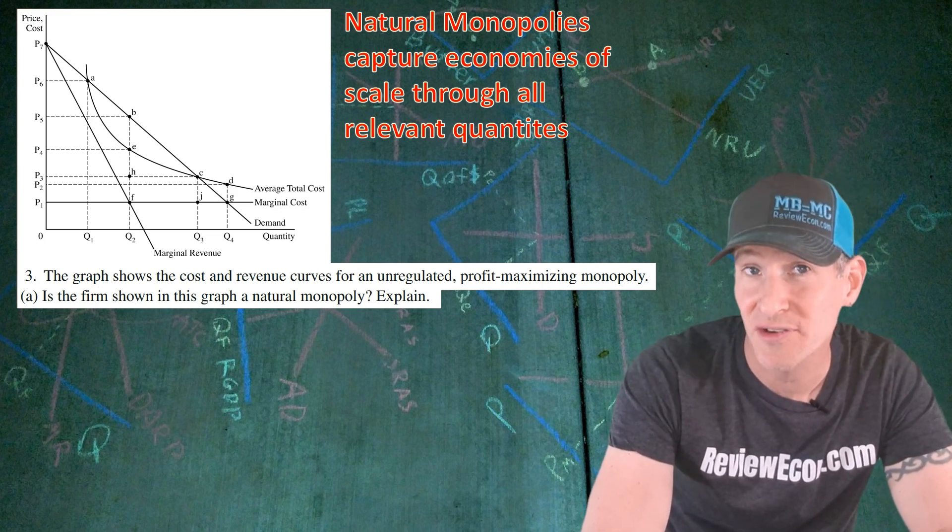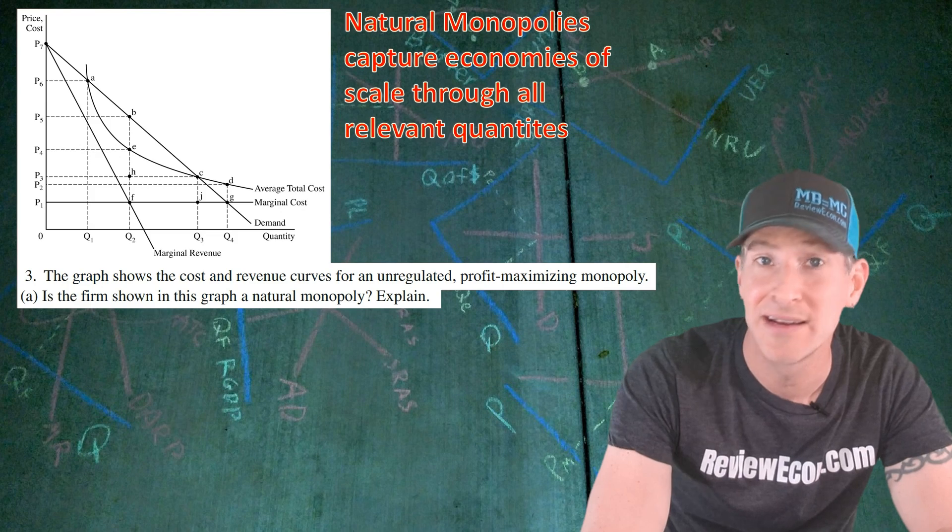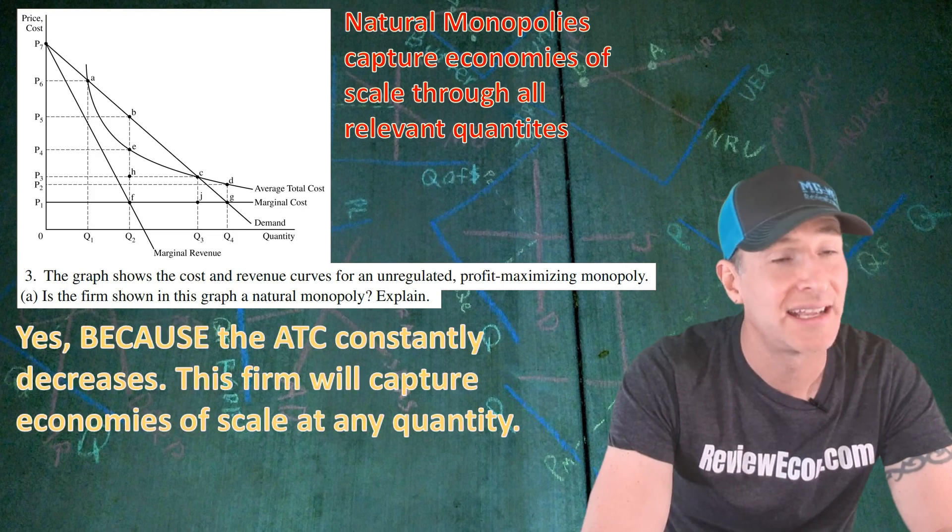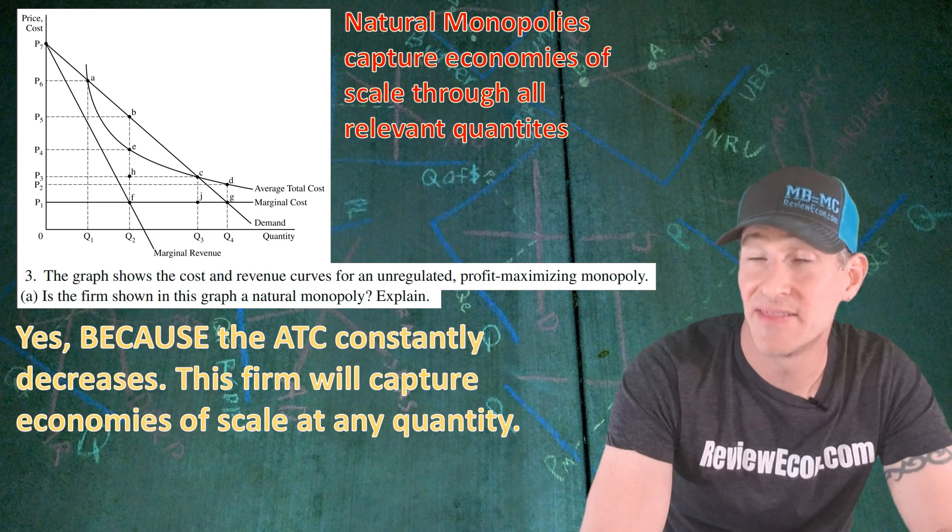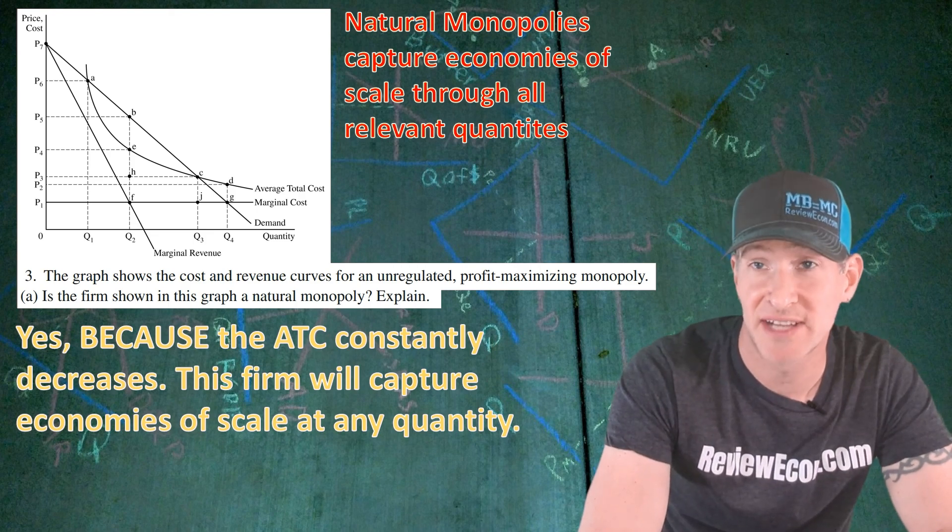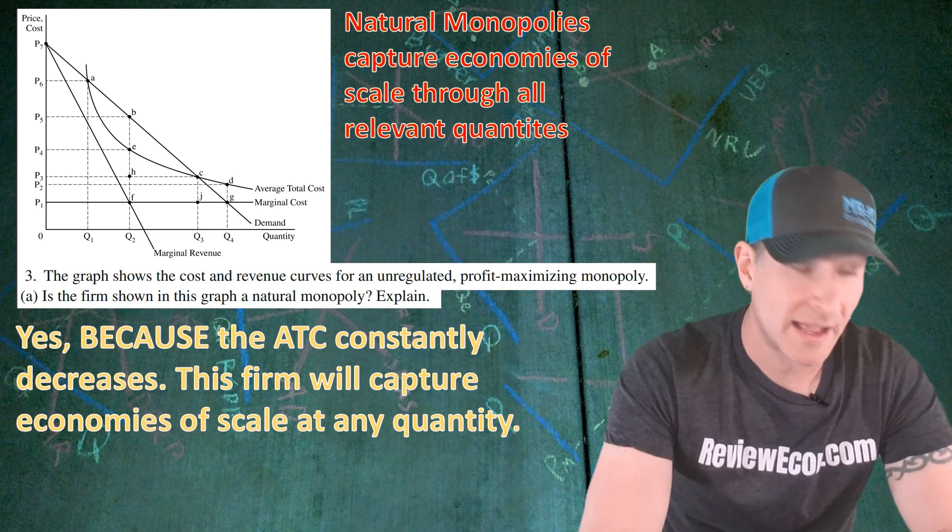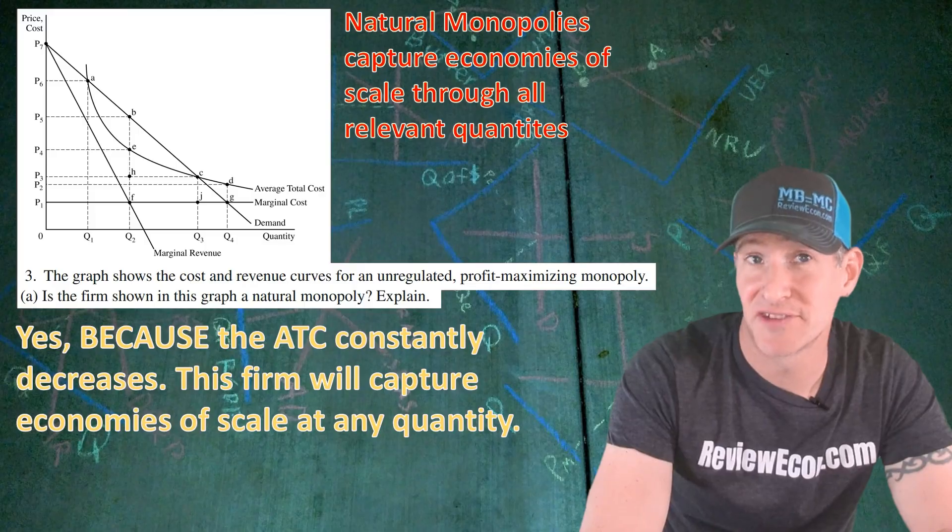And since the average total cost curve on this graph is constantly downward sloping, that leads us to our answer here: yes, because the average total cost curve constantly decreases and this firm always has economies of scale at any quantity on the graph. If you've answered something like that, you get your first point.